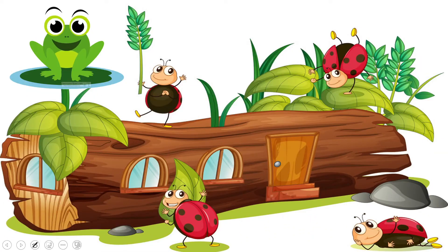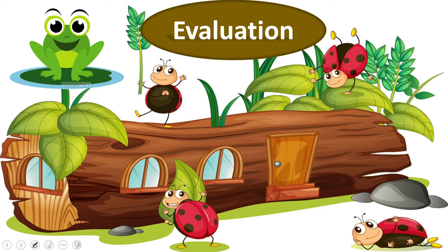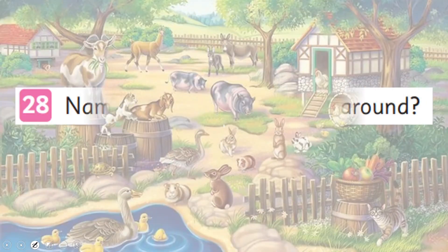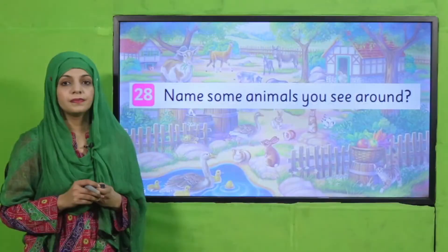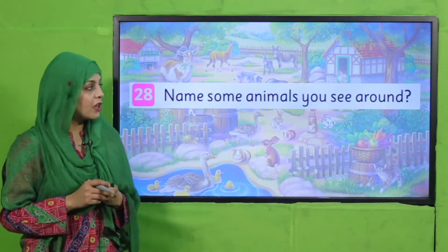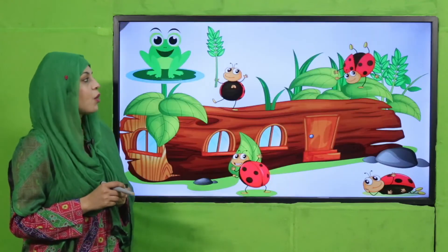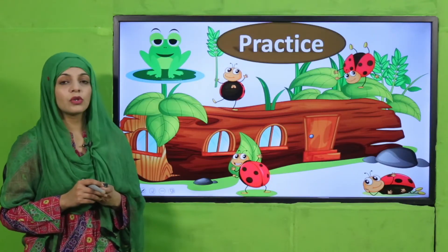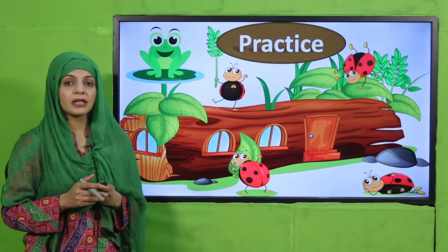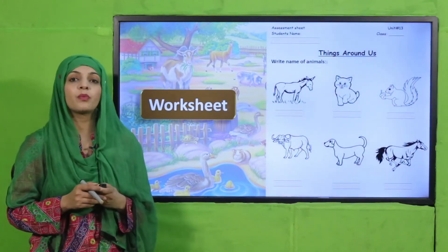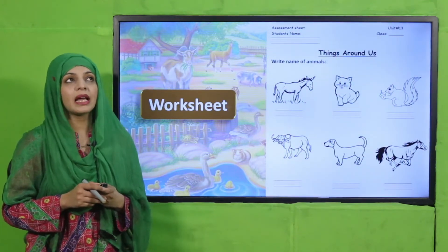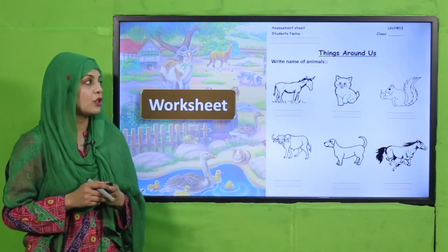Now is the time for evaluation. Quickly tell me: name some animals you see around. Now is the time to note down and do the practice. For practice, you can download this worksheet from the description box below the video, or you can get it in print form from a teacher.